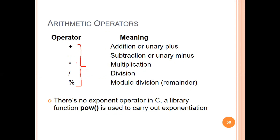Looking at the mathematical operators, there is no exponent operator in C. Instead, a function called the power function is used for exponentiation. For example, 5 raised to the power of 2 can be found using the power function.